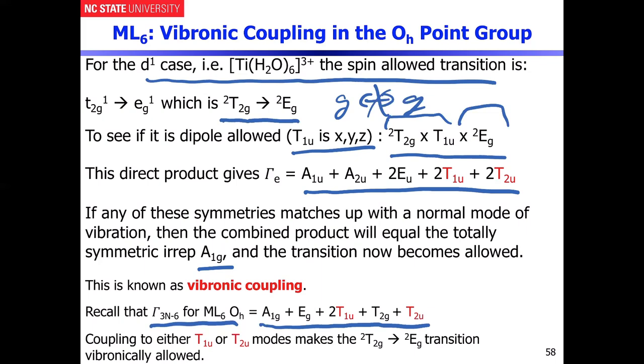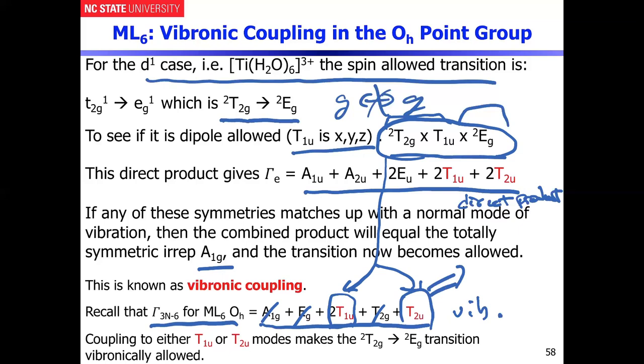I show you in red the coincidences between the vibrations from the molecule and what we got from this direct product. When you include the dipole moment operator and you recognize the fact that there's two coincidences, this T1U and T2U. None of these other vibrations can actually couple to that electronic transition to make it allowed. But if this particular electronic transition couples with either of those vibrational modes, we know that if we multiply this by T1U or T2U, both of those would give us the totally symmetric answer. And that tells you that that makes the transition suddenly allowed.